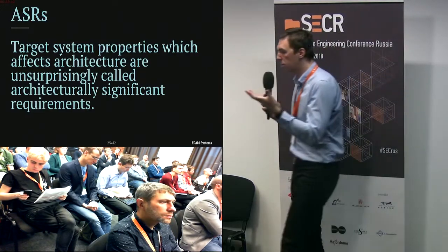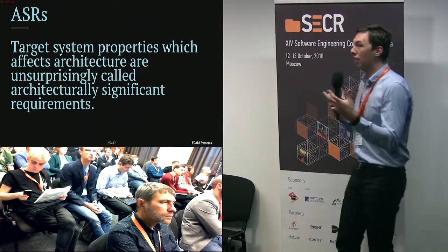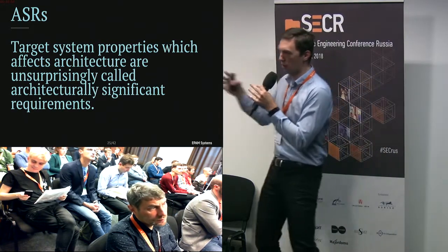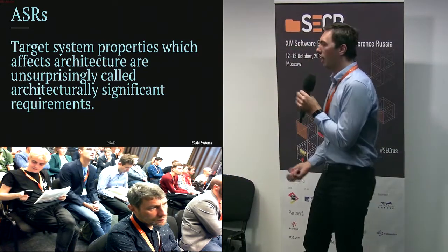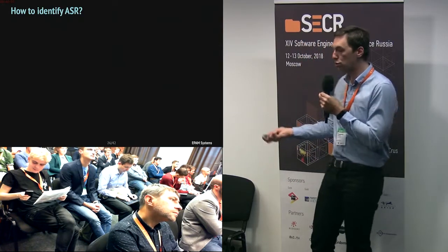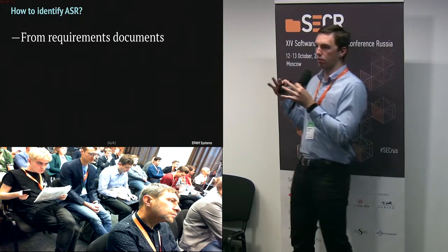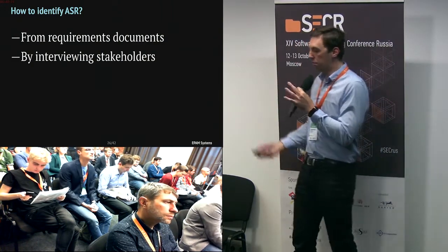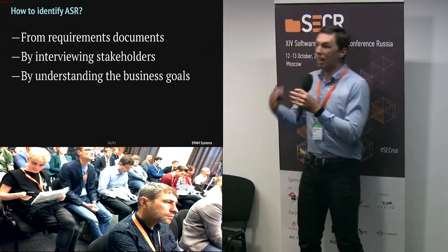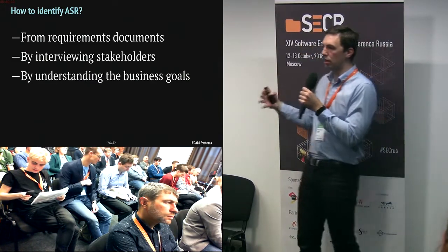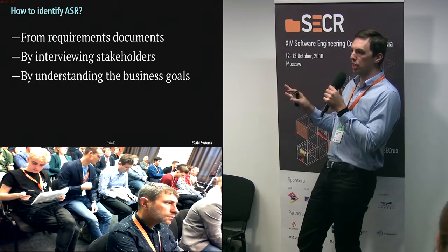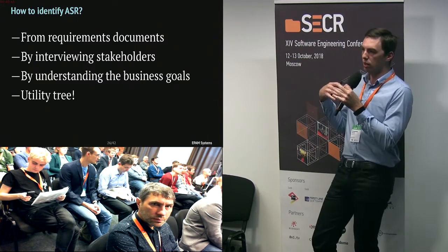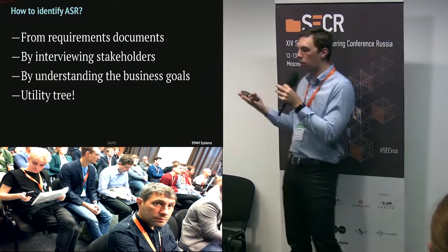The target system properties that significantly affect architecture are called architecturally significant requirements, or ASRs. To identify ASRs, you can review requirements documents, interview stakeholders using quality attribute workshops, or derive them from business goals — for example, a mobile app meant to engage users must be performant, or users will uninstall it. A useful tool for gathering ASRs is the utility tree.